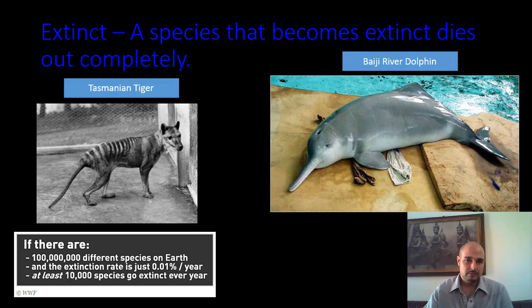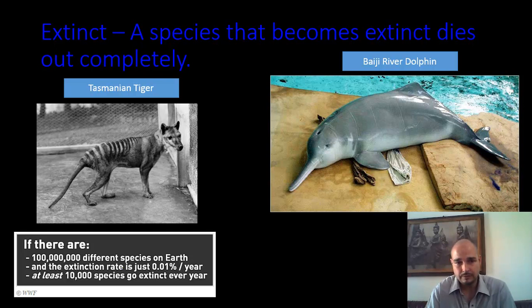Today, most of the extinctions that occur throughout the world are due to humans. According to the World Wildlife Foundation, there are over 100 million different species on Earth, and it's estimated that at least 10,000 species are going extinct every year.